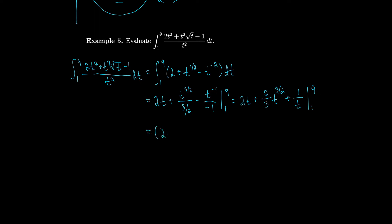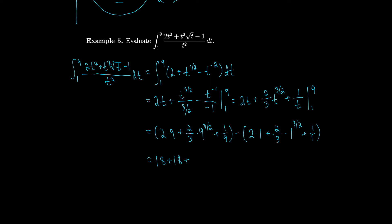Evaluating: 2(9) plus (2/3)(9^(3/2)) plus 1/9, minus [2(1) plus (2/3)(1^(3/2)) plus 1]. It's not as straightforward as integrating from zero since the lower limit doesn't cancel out. In the end, all of these numbers combine to give us 32 and 4 ninths.